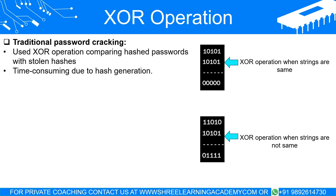Traditional password cracking techniques: traditionally, attackers cracked passwords by comparing hashed passwords with stolen hashes using an XOR operation — a mathematical operation that compares two bits of data. If the compared bits are different, the result is a one; and if they're the same, the result is zero. This approach, however, proved to be time consuming, as generating hashes was the most prolonged part of the password cracking process.